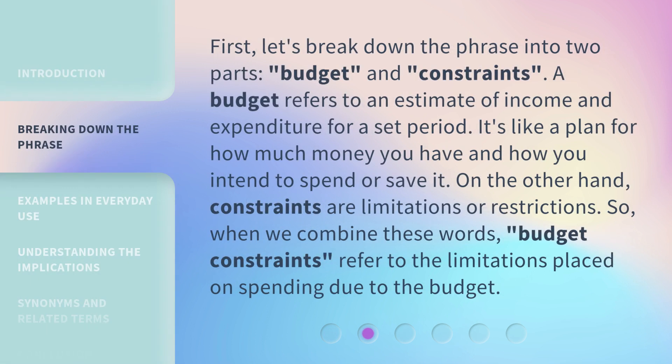First, let's break down the phrase into two parts: budget and constraints. A budget refers to an estimate of income and expenditure for a set period — it's like a plan for how much money you have and how you intend to spend or save it. Constraints, on the other hand, are limitations or restrictions. So when we combine these words, budget constraints refer to the limitations placed on spending due to the budget.